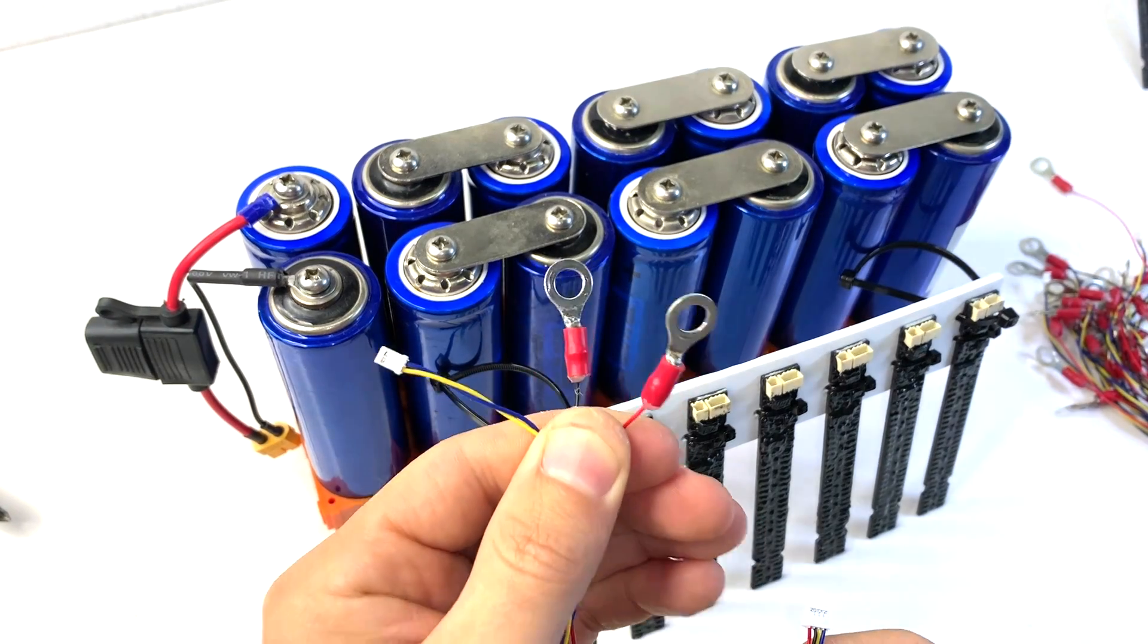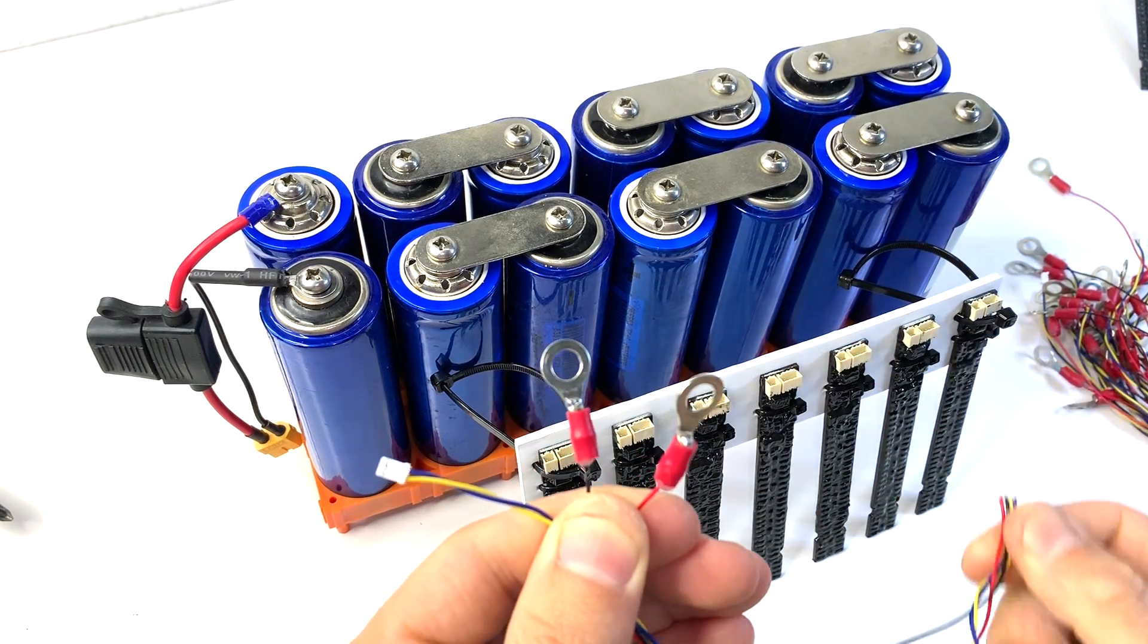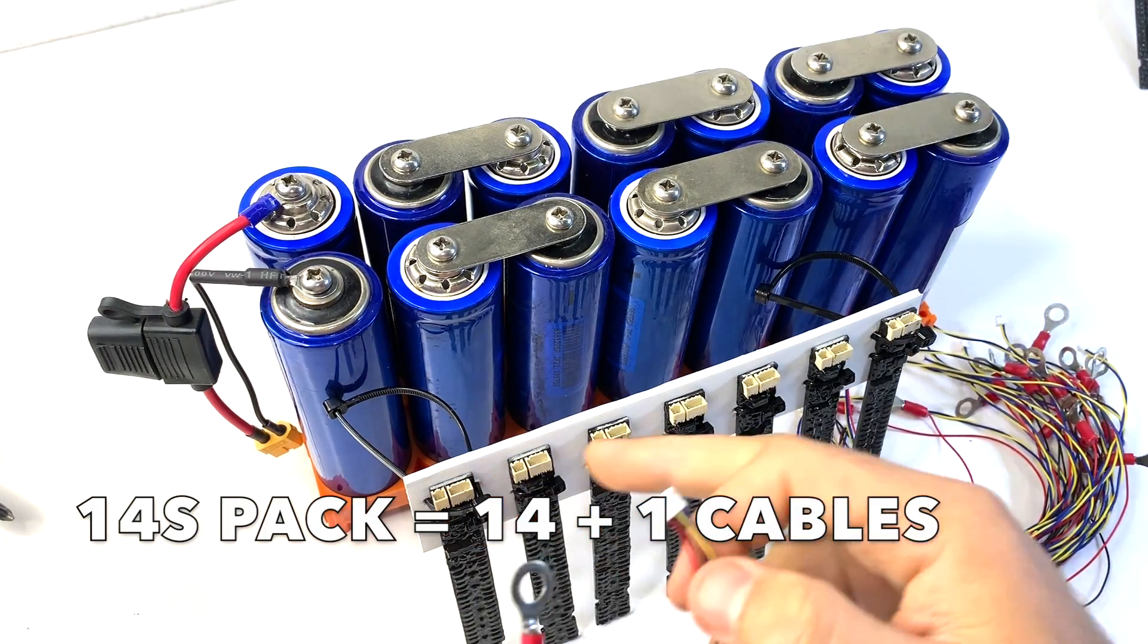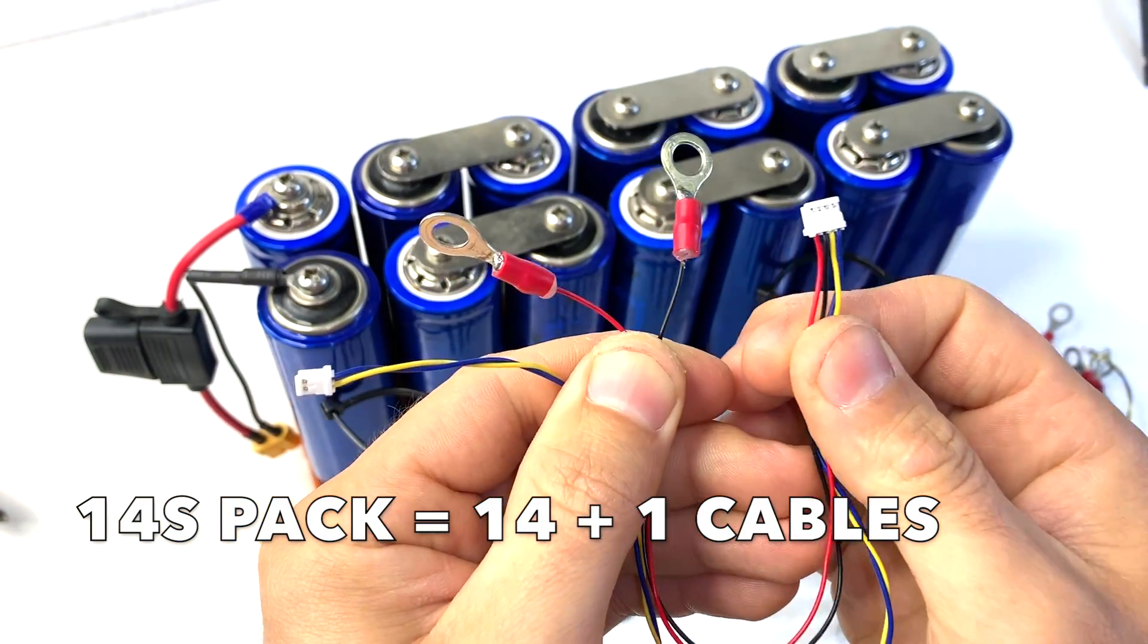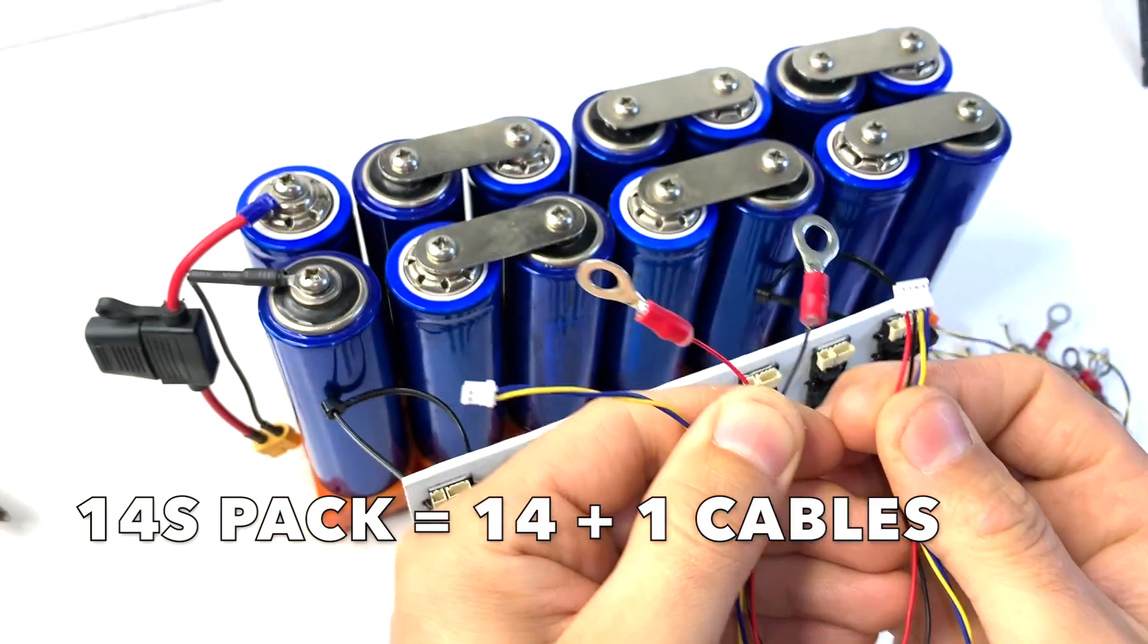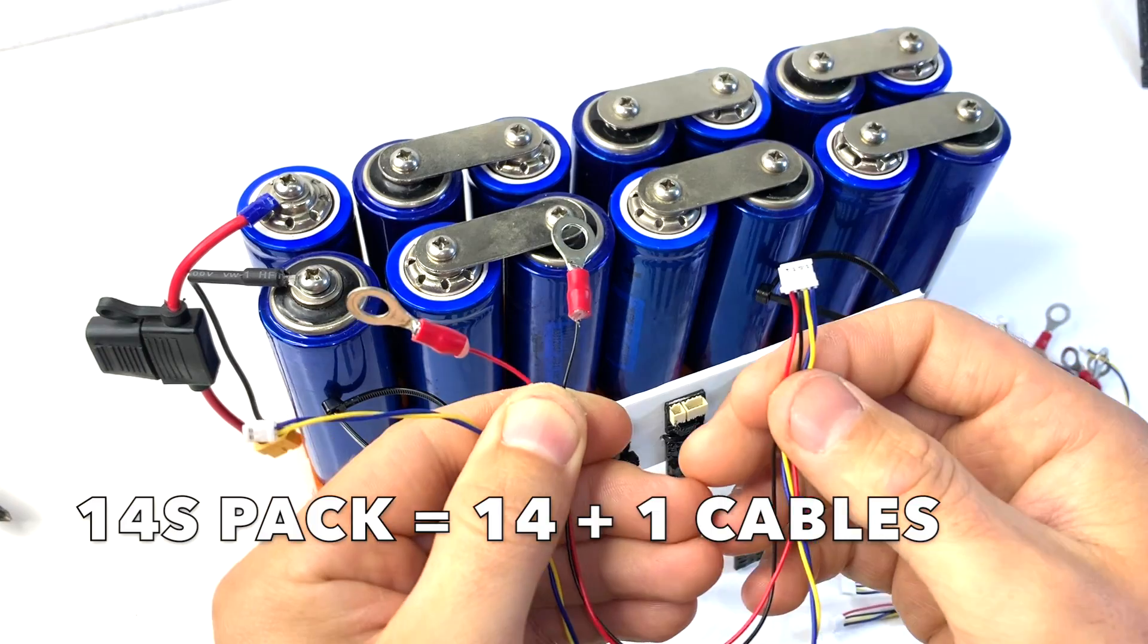So you first start with this, and then later you're going to come and connect all the little connectors here. In this case, we have 14 cell monitors for 14 cells. We're going to need 15 cables. Your kit actually comes with the extra cable so you can complete all your setup here in a daisy chain network.